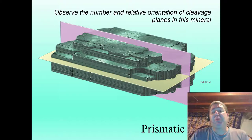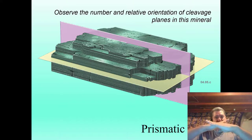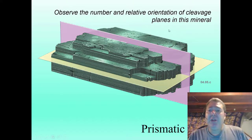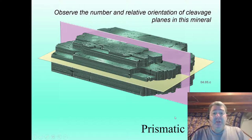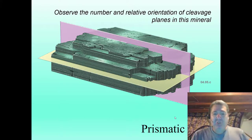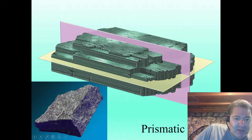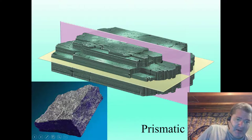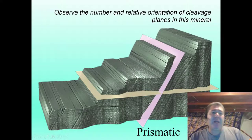Two directions of cleavage is known as prismatic cleavage. It's important to differentiate whether those directions are at right angles or not. Here we have prismatic cleavage at right angles to each other — two directions at right angles — and this is going to create a square kind of profile, like this piece of augite here. You can see the breaks in an almost square pattern. That is also called prismatic cleavage.